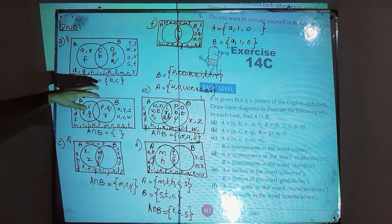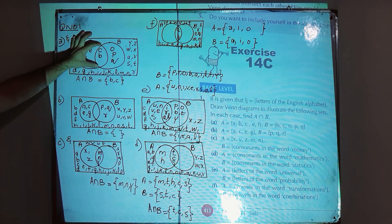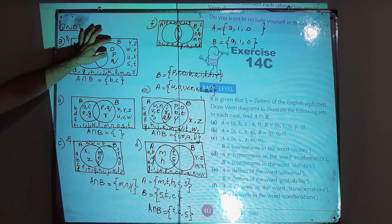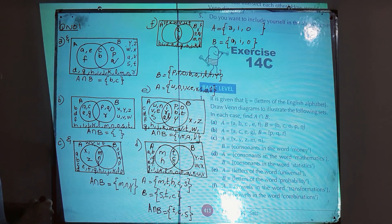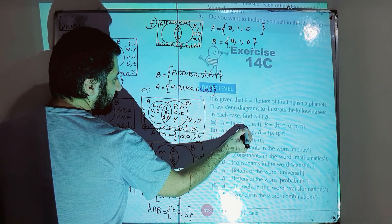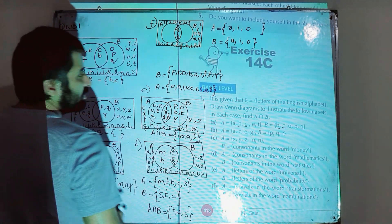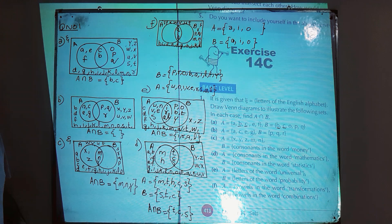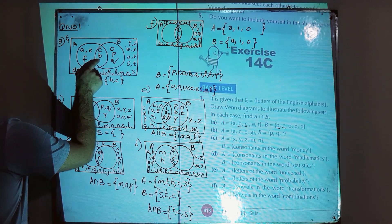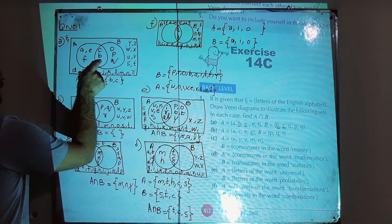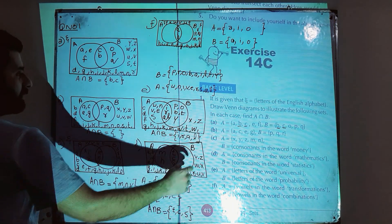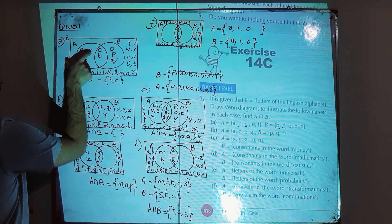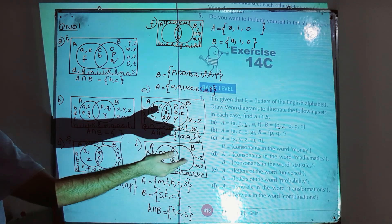We are going to write in the overlapping part the elements which are common to both A and B. Observing sets A and B, we have b and c — both of these elements are part of set A as well as part of set B. So we write b and c in this overlapping part. After writing b and c here, this part belongs to A as well as to B.